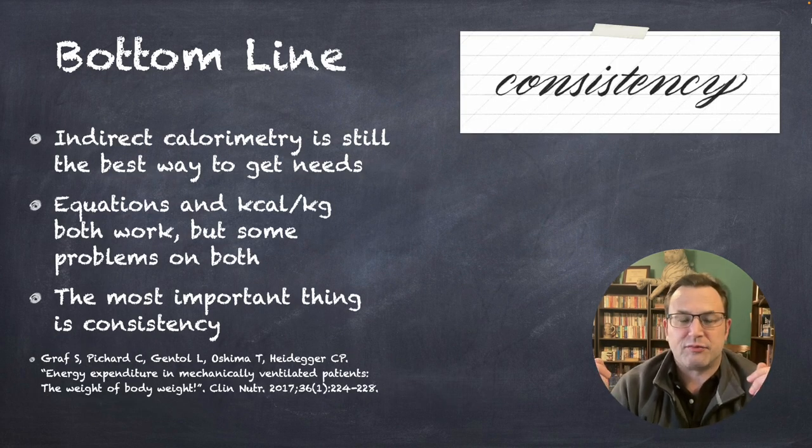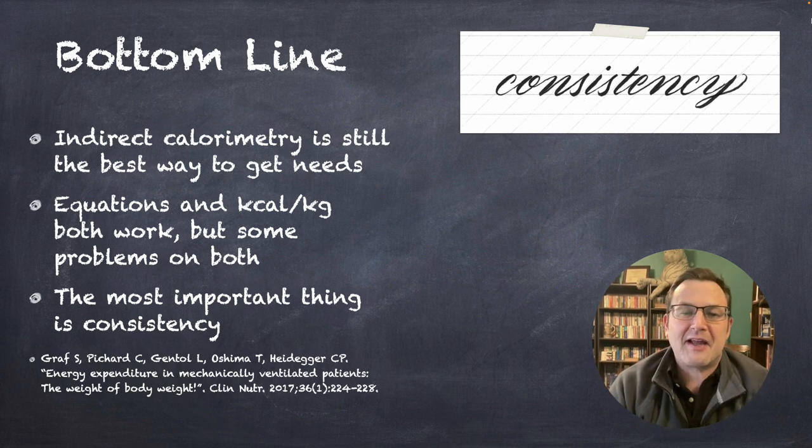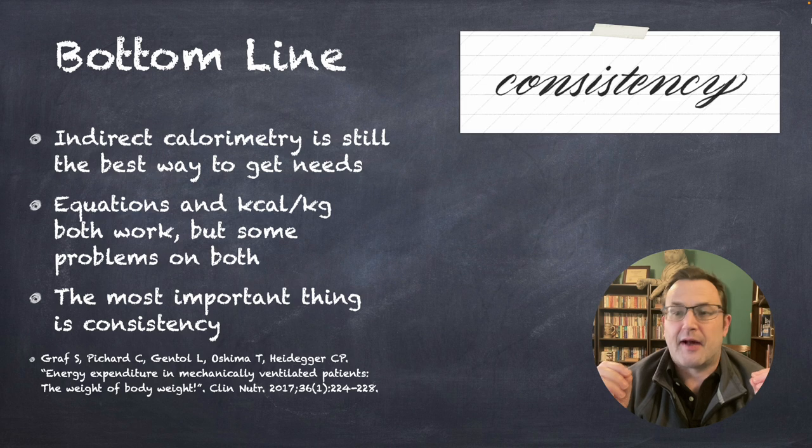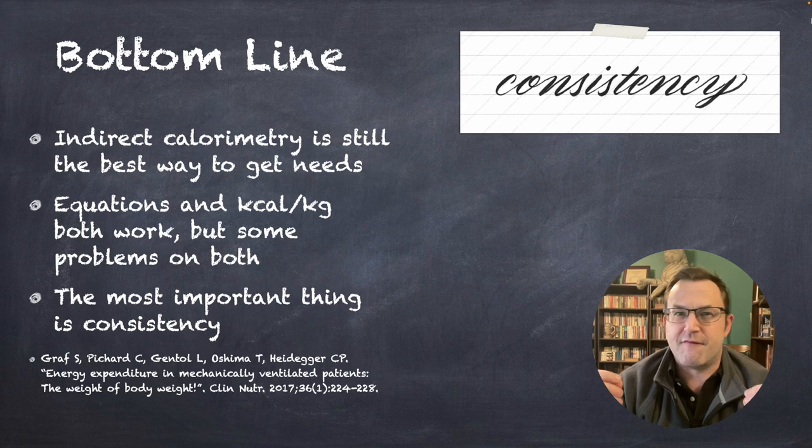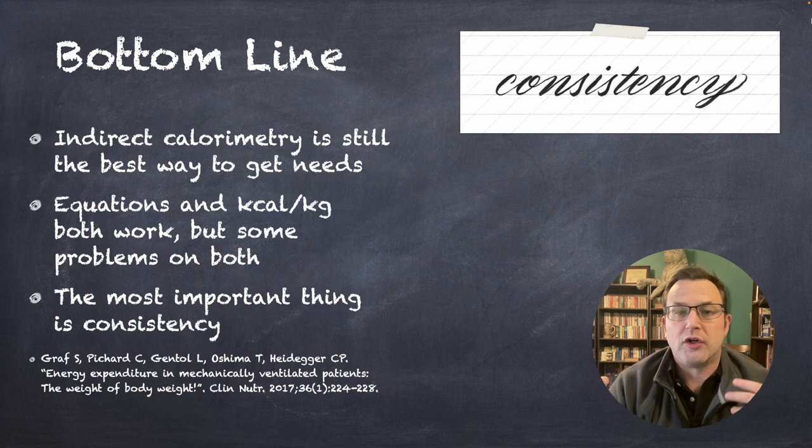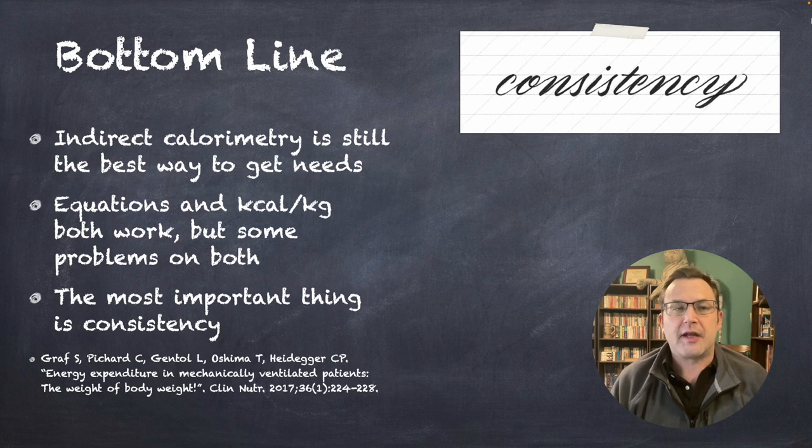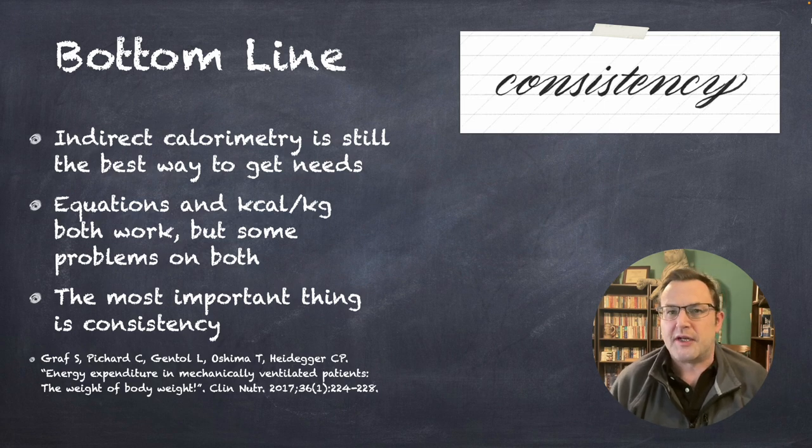So, what's the bottom line on this? Indirect calorimetry is still the best way to get needs, but you're probably not going to have that available to you everywhere. Equations and calories per kilogram both work. There are pros and cons to both of them. The most important thing is consistency. The important thing is that you're using a similar tool each time, so that if there's a change in status, you know to what degree it's going on.